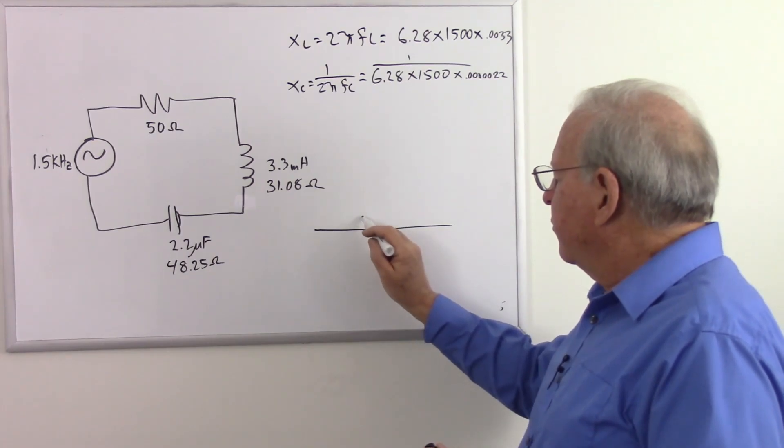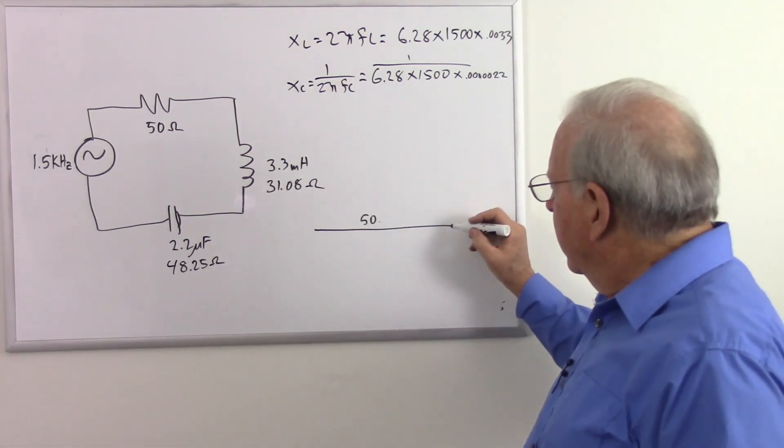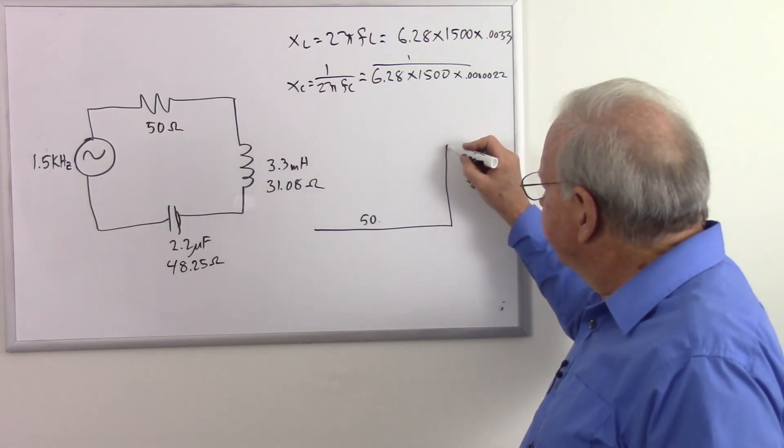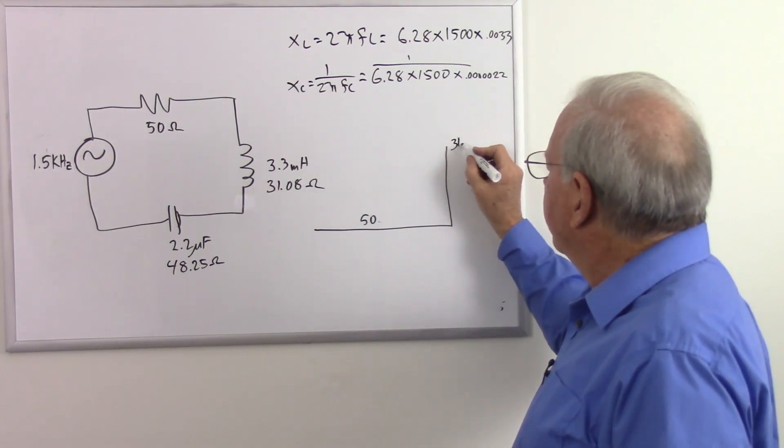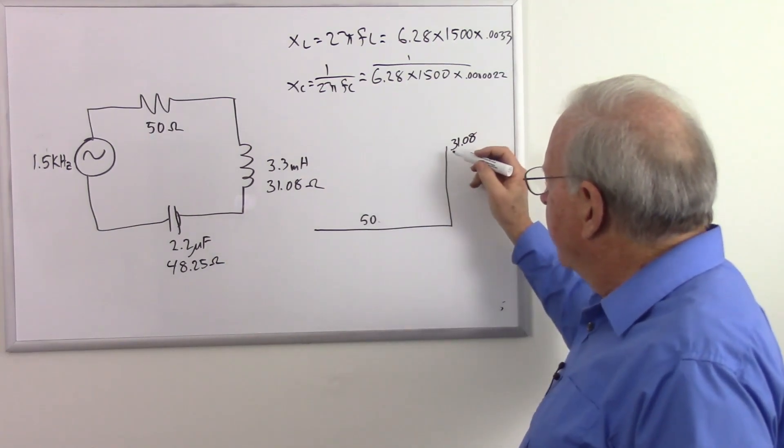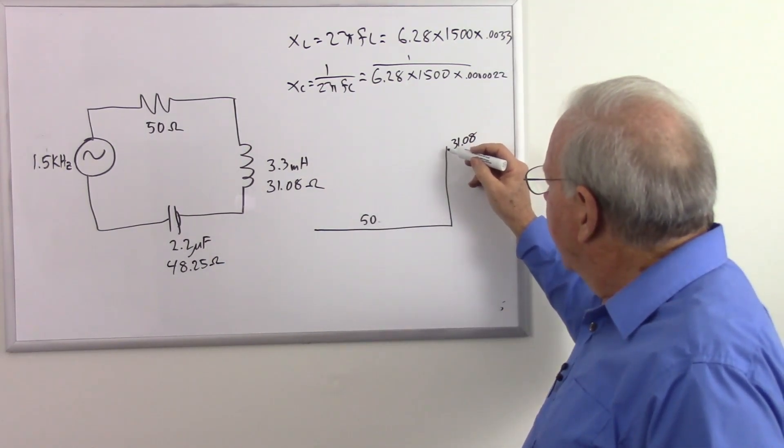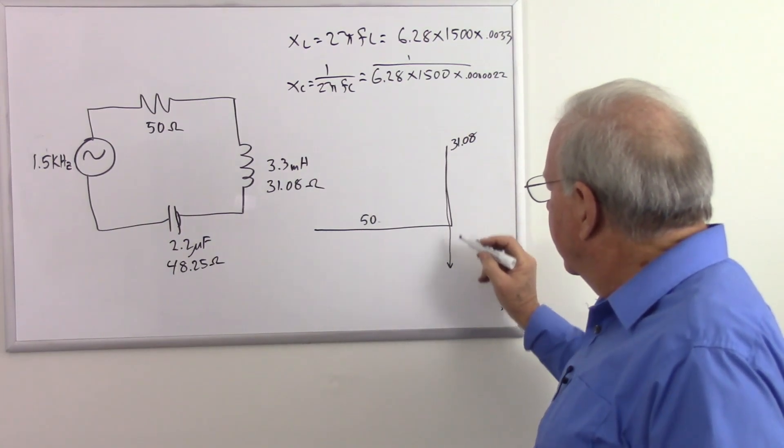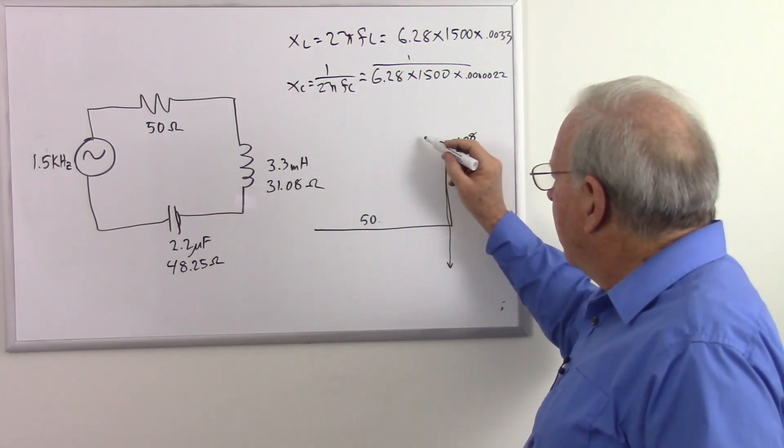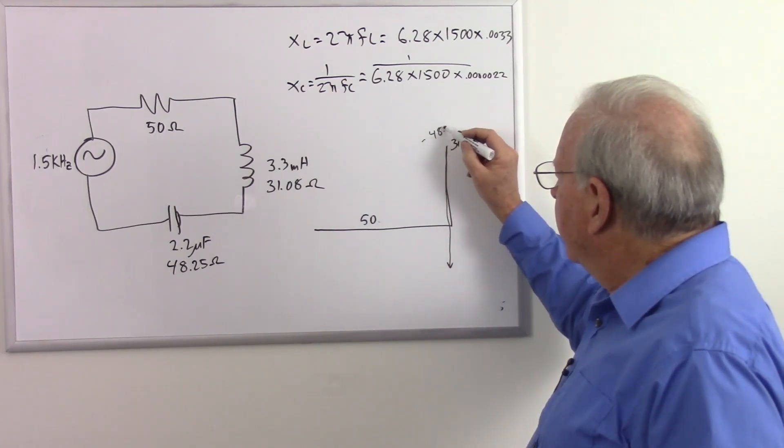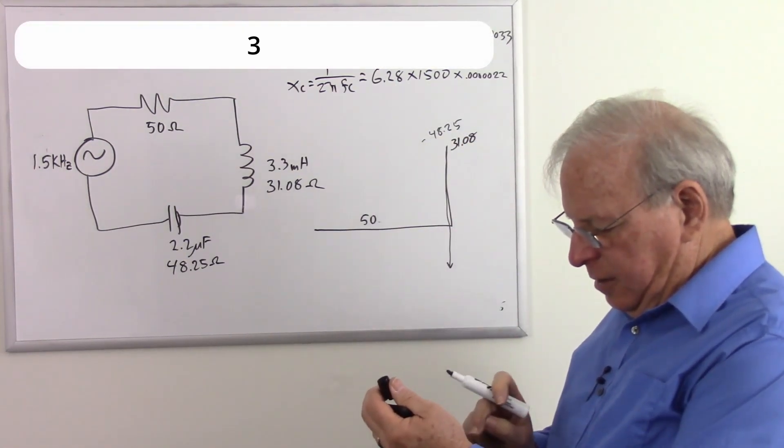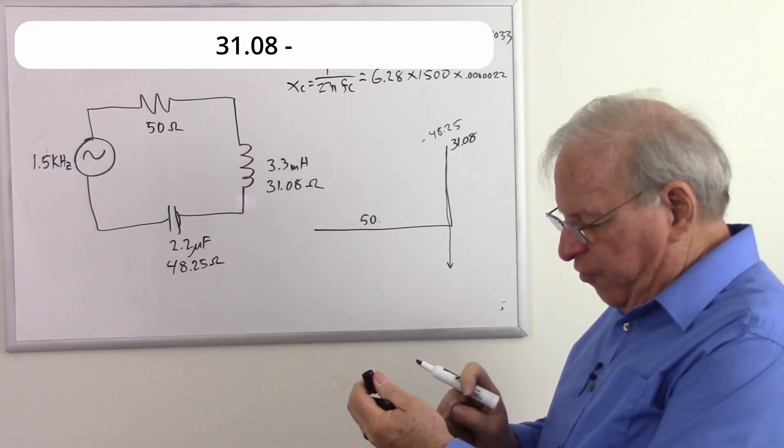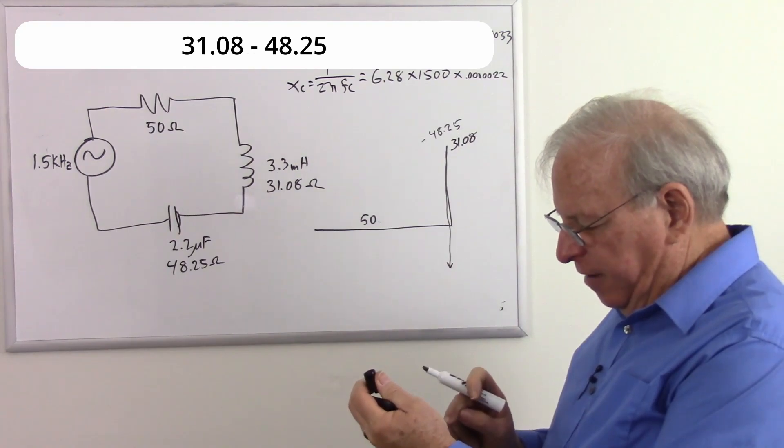So let's draw our triangle. There's our resistance of 50 ohms. We're going to go up about there, 31.08. And then we're going to subtract 48.25.